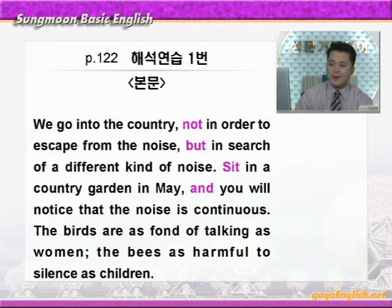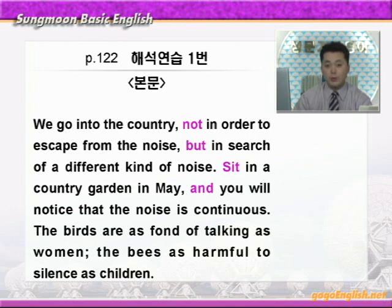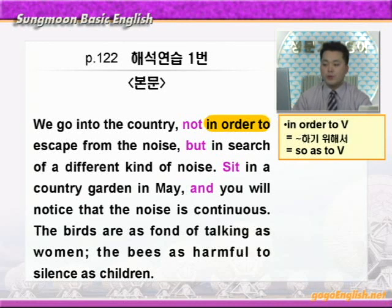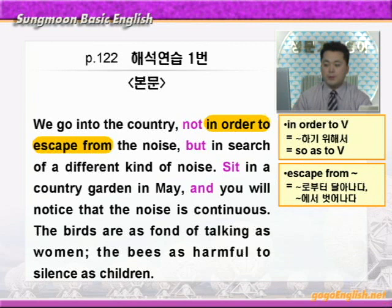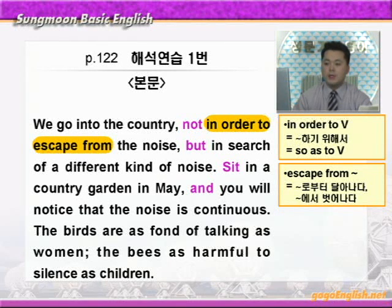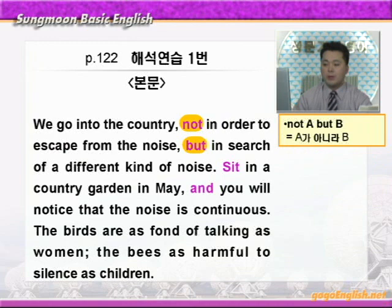그럼 같이 해석해 보겠습니다. 'We go into the country.' 여기 country는 나라가 아니라 시골이라는 뜻이죠. 우리는 시골로 간다. 'Not in order to escape from the noise.' in order to에 동그라미 쳐보세요. noise는 소음이란 뜻이니까, 소음으로부터 달아나기 위해서가 아니라. but — 윗줄에 not과 여기 but에 동그라미 쳐보세요.